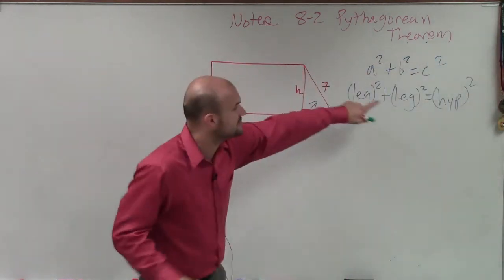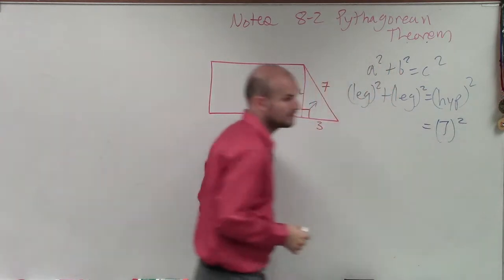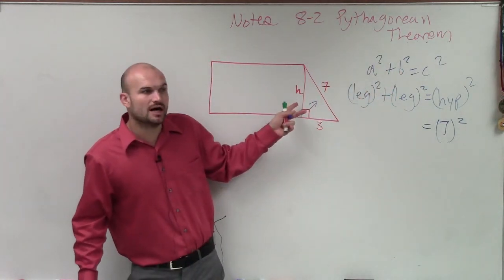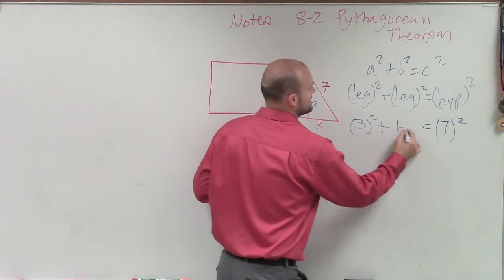We know the hypotenuse is 7. And we know what one leg is, but we don't know what the other leg is. So we say 3 squared plus h squared.